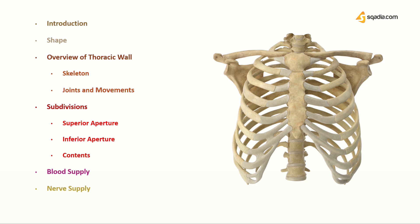And then we're also going to be talking about the subdivisions of the thoracic cavity. We have a superior aperture right over here and an inferior aperture — you'll be able to see a better view later on.